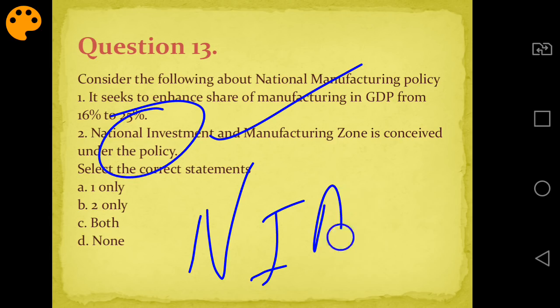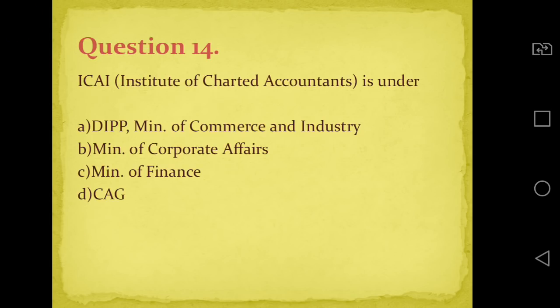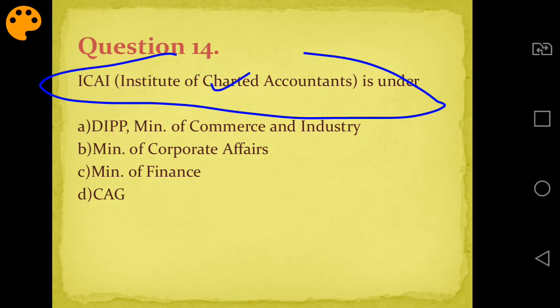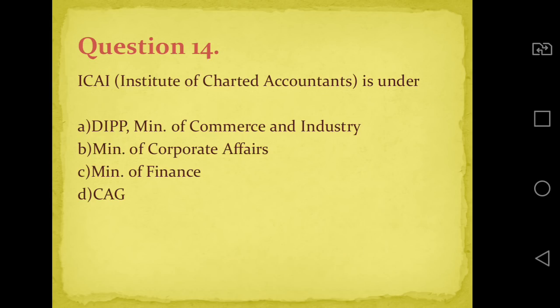A bonus question: in which state was the first National Investment and Manufacturing Zone set up? Answer this in the comment section. Question fourteen: ICAI - Institute of Chartered Accountants - falls under which ministry? Options are DIPP/Ministry of Commerce and Industry, Ministry of Corporate Affairs, Ministry of Finance, or CAG. Answer is B - Ministry of Corporate Affairs. Chartered Accountants work in large corporate firms, so logically it falls under Ministry of Corporate Affairs.